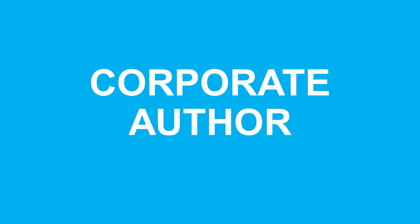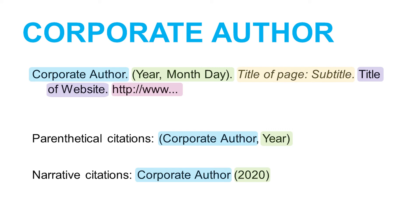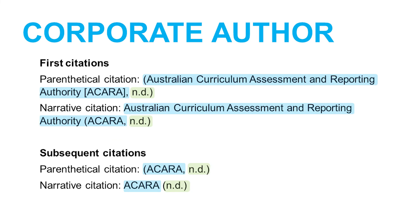The next type of reference is a web page with a corporate author. If there are no named authors, use the name of the organisation. If the author and the name of the website are the same, leave out the name of the website to avoid repetition. The name of the corporate author is also used in the in-text referencing. If the publication date is not available, use n.d., which stands for no date. If the corporate author's name is known by an acronym, you can define the abbreviation the first time that you cite the resource in-text. In subsequent in-text citations, you can then use the acronym.